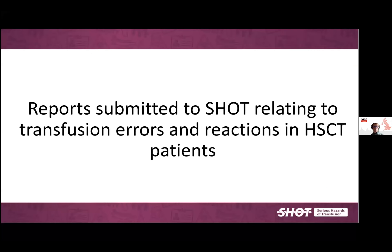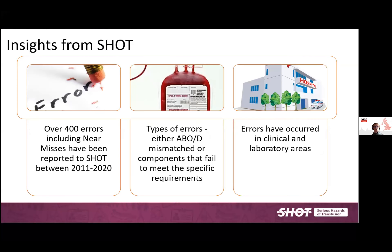Given how complex this whole process is, errors inevitably occur. Reviewing all SHOT reports involving transplant patients from 2011 to 2020, there were over 400 errors including near-miss events. The vast majority involved transfusion of ABO and/or D mismatched blood components and failure to supply irradiated components. These errors occurred both in clinical and laboratory settings, which is hardly surprising given the complexity of decision-making in this patient group.